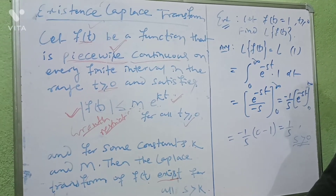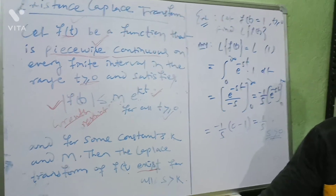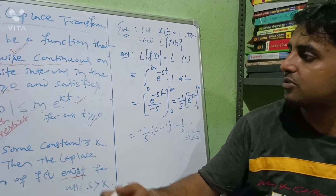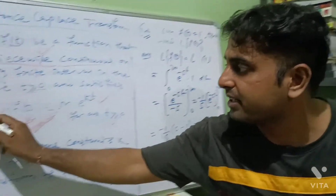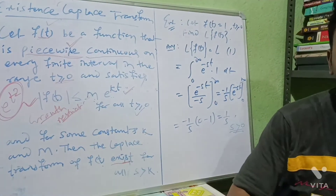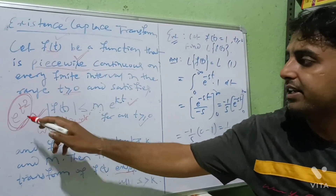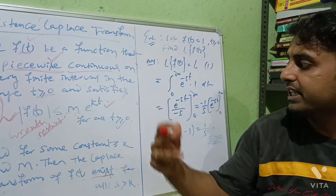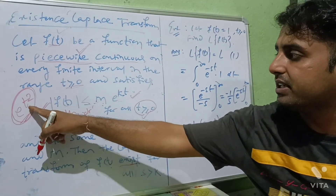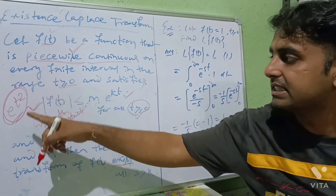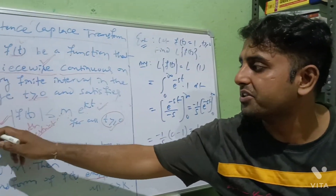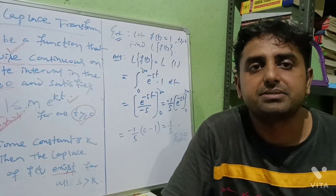What are examples when the Laplace transform does not exist? Suppose we write e^(t²). If you evaluate e^(t²) for t ≥ 0, it will increase exponentially. So the Laplace transform of e^(t²) does not exist.